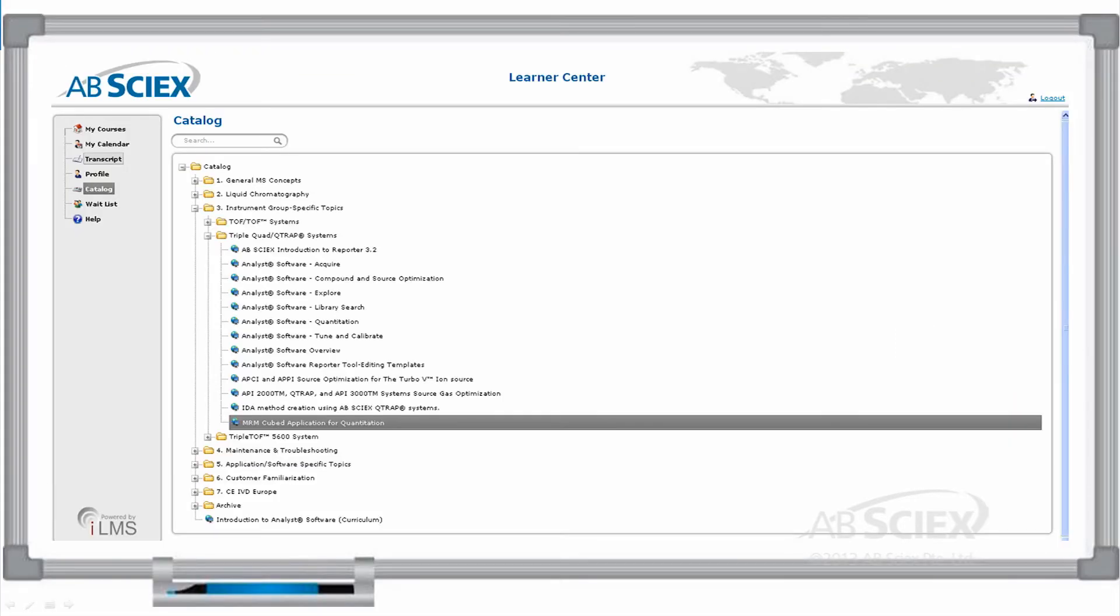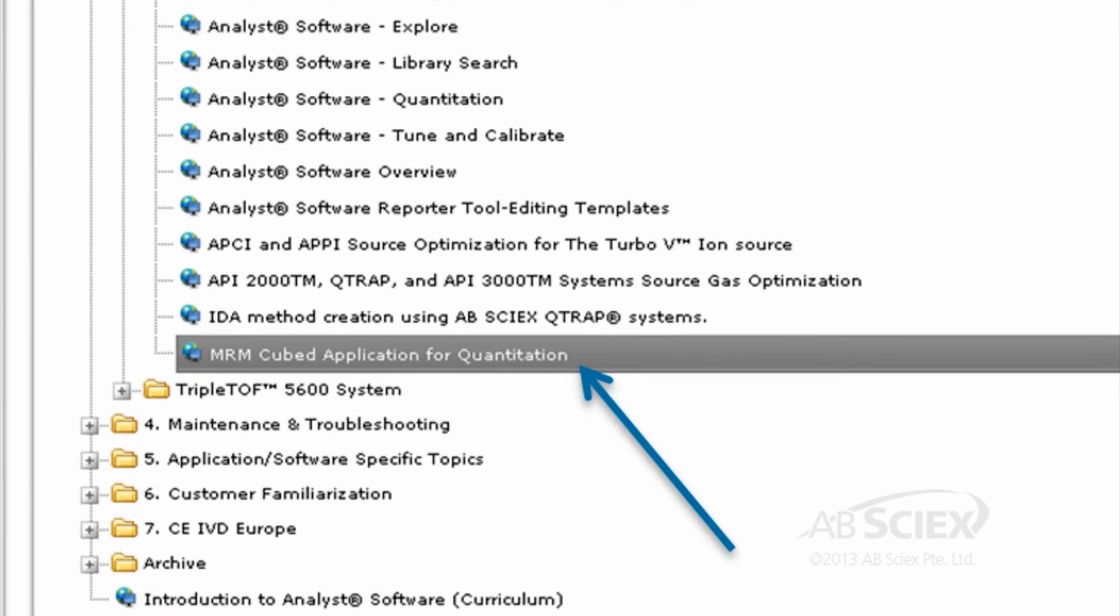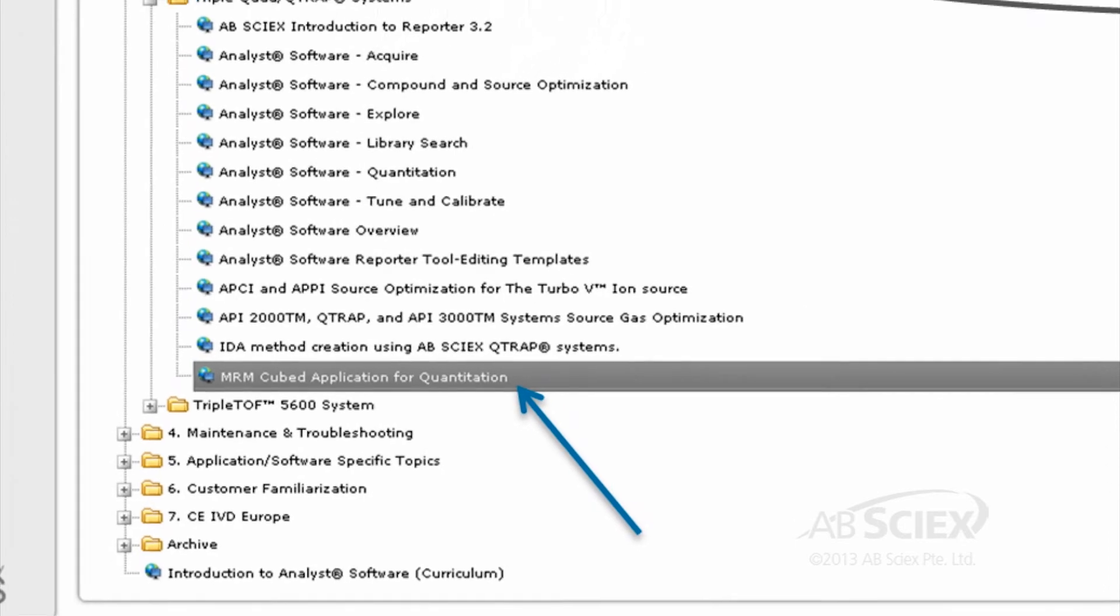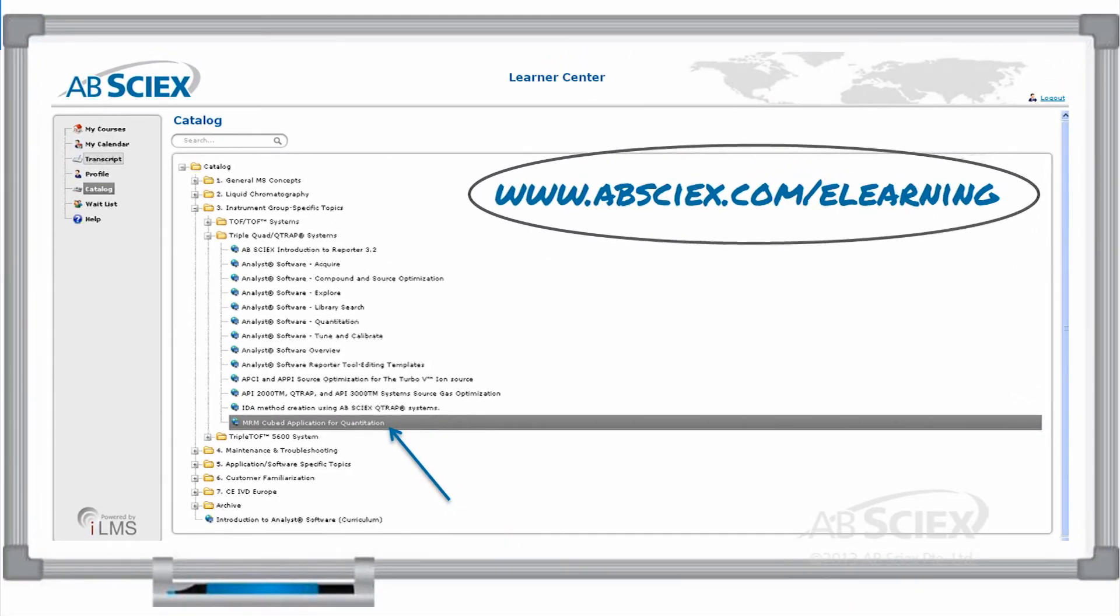To get a step-by-step guide through the manual and automated approaches to acquiring MRM cubed transitions for compounds, visit our e-learning portal at www.abscix.com/e-learning. Once you enroll, you will see our catalog of courses. Select the MRM cubed application for quantitation course. This course will guide you through all of the parameters for finding and optimizing the MRM cubed transitions for compounds using either the manual or automated approaches.